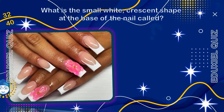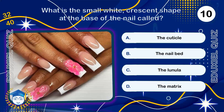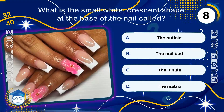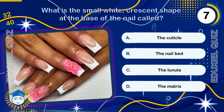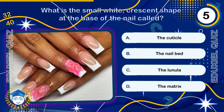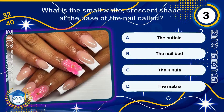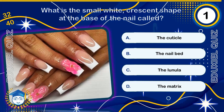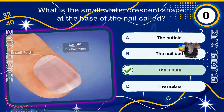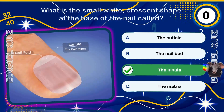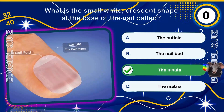What is the small white crescent shape at the base of the nail called? The lunula. The lunula, Latin for 'little moon,' is the visible part of the nail matrix, where new cells are actively being produced.